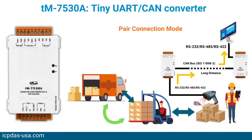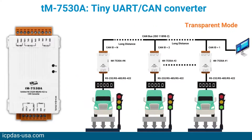ICP-DAS USA has many UART CAN product solutions that are widely recommended on the market. These converters can help users implement communication between UART and CAN networks. The TM-7530A is a tiny UART CAN converter designed to fit narrow environments due to its small size. It has isolation on the power side and on the CAN bus side, and its performance is faster than other UART CAN models.